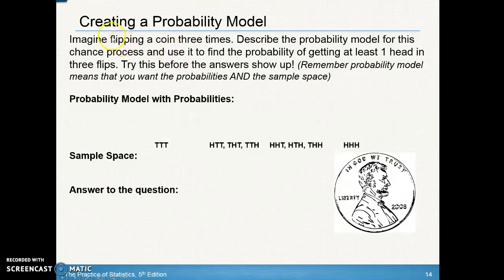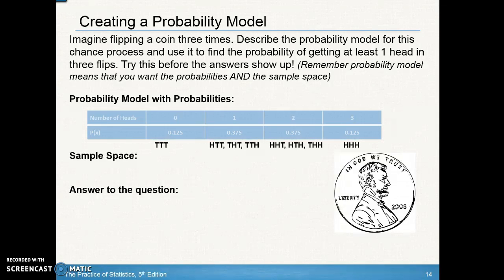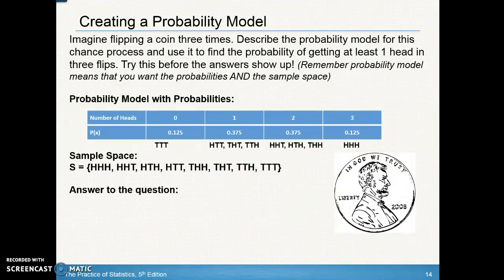Let's look at another probability model example. We're flipping a coin three times. Describe the probability model for this chance process and use it to find the probability of getting at least one head in three flips. Step one: describe the probability model — that means the sample space plus the associated probabilities. Step two: find the probability of getting at least one head.